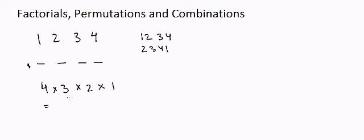The total number of arrangements for four students to sit on four seats is four factorial, which is 4 × 3 × 2 × 1. If you calculate it: 4 × 3 = 12, and 12 × 2 = 24. So the answer is twenty-four different arrangements.